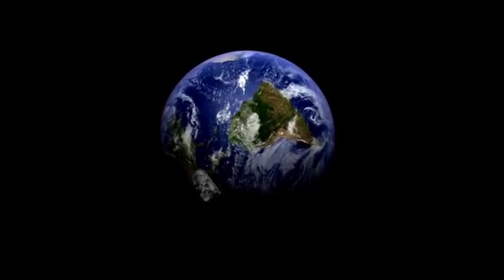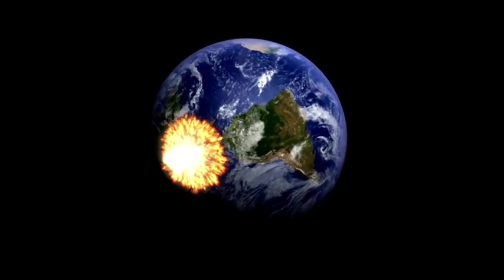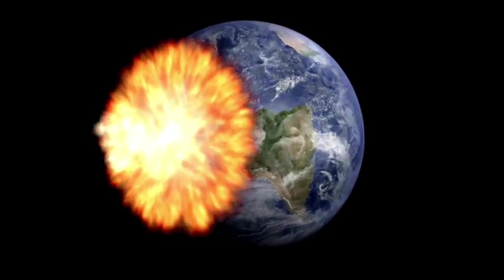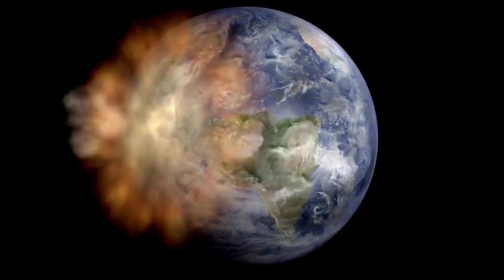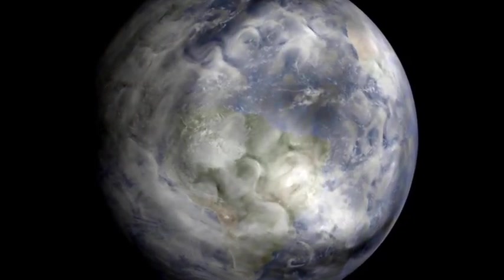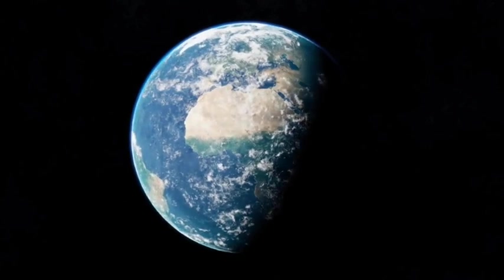For asteroid 2024 PT5, predictions indicate that Earth's gravity will capture it on September 29, 2024. During this time, PT5 will complete a single loop around the planet before escaping Earth's orbit and resuming its path around the Sun, departing on November 25, 2024.